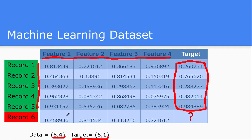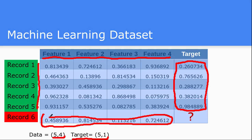Now these are all the training data. What about the testing dataset? In the testing dataset, you have been given the four features and your objective is to compute the output value. That is what the machine learning problem is — you have a training data matrix, you have a target training set matrix, and you need to compute the output value for the test data set. For the test data set all the features are given; these features can be anything depending on the different datasets.